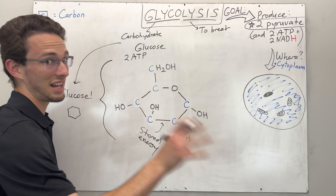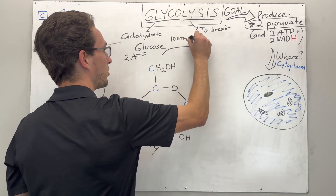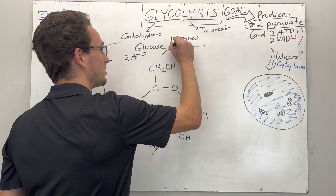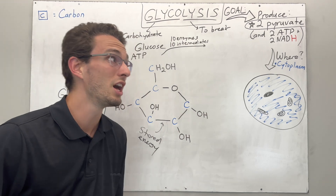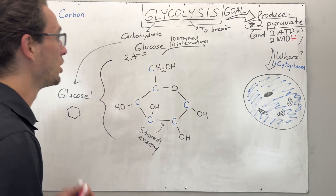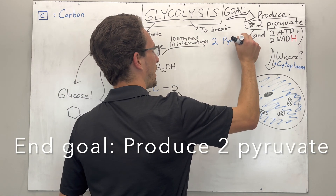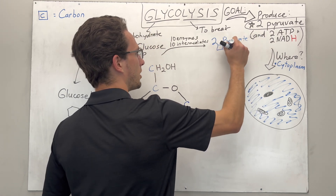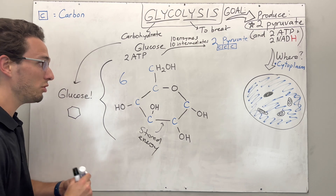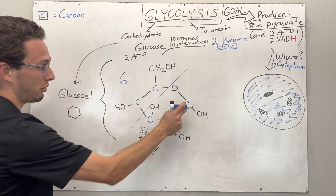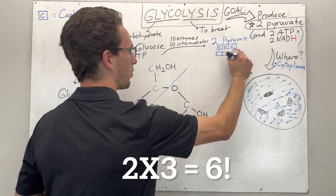I'm going to simplify this a lot and just break it down very simply. In this process there are over 10 enzymes — basically little proteins that are catalyzing chemical reactions, making things occur — and therefore there are 10 different intermediates. If you want to know each and every one of those intermediates and enzymes, you can watch a different video on glycolysis. What I want you to know is that we will produce two pyruvate molecules. Each one is a three-carbon chain molecule. We started with six carbons in glucose, so basically we're chopping the molecule in half — a three-carbon molecule and a three-carbon molecule — for a total of six carbons.